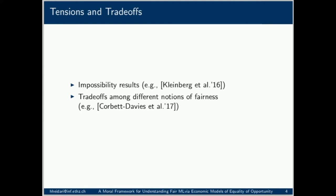When it comes to these formulations of fairness, unfortunately we cannot have it all. FairML has already established the existence of trade-offs among various notions of fairness. Importantly, it has been shown that satisfying multiple fairness criteria at the same time is impossible. Now the question is, how should we deal with these findings?